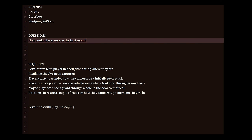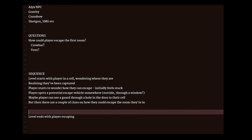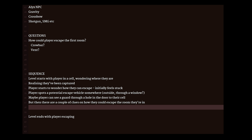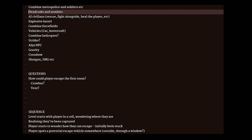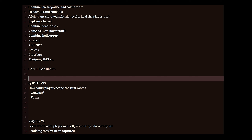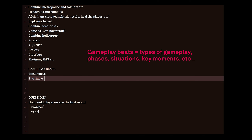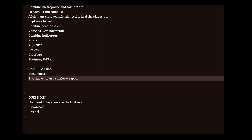How could the player escape the first room? Crowbar, vent. It's conceivable there could be a crowbar somewhere in the room if the player looks around — it wouldn't seem too ridiculous or unrealistic. They could use that crowbar to break a vent and escape, creating a way out. For gameplay beats, I want some sense of sneakiness — not full stealth, but sneakiness — starting with just a melee weapon, because it's the only silenced weapon in Half-Life 2. I like the idea of a first part of the level where the player is quiet, thinking they have to be quiet because they're trying to break out, which helps sell the theme.